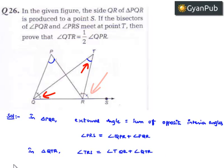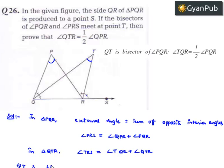Now we know that QT is the bisector of angle Q. Therefore, we can say that angle TQR is equal to half times angle PQR.